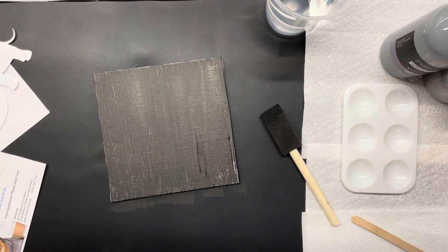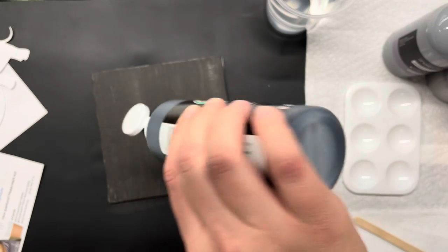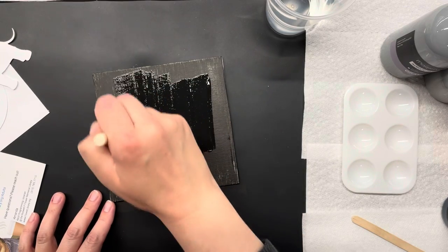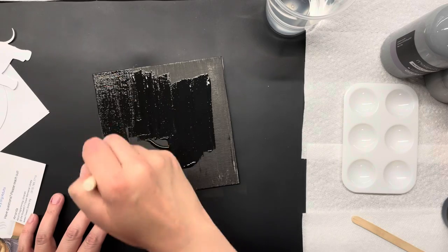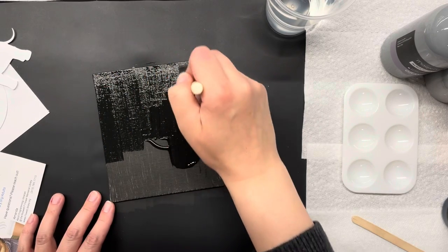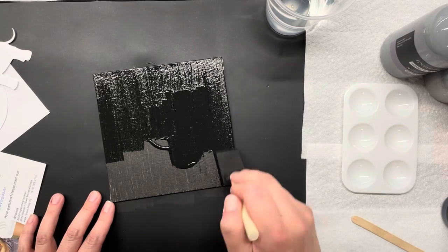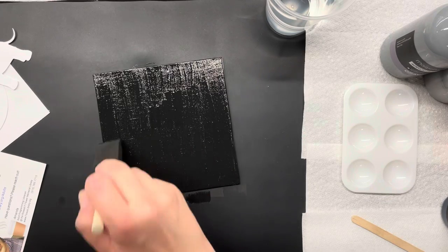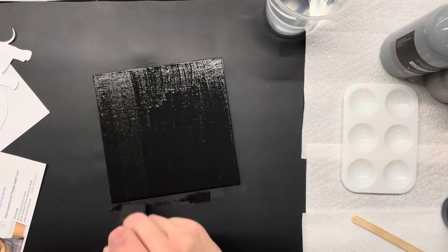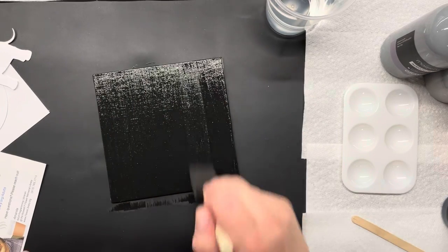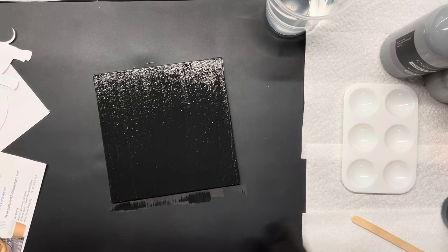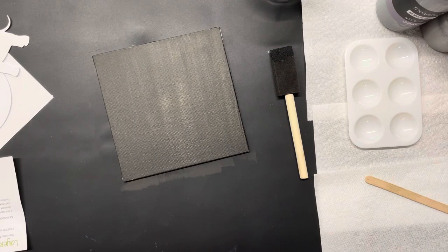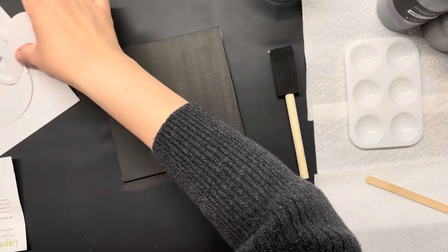Now that my first layer has dried it's still a little streaky for me so I'm going to add a little more and do another second coat of the black. Once that is dry we can start our next steps with the actual cardstock templates.